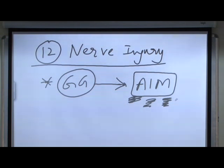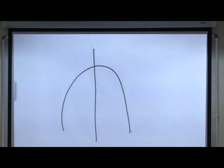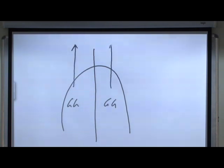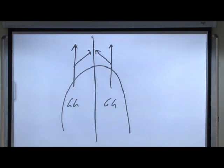You have to understand that there are two genioglossus muscles, one on each side. If this is the midline and this is the tongue, then we have genioglossus on each side. Both genioglossus muscles together take the tongue anterior, inferior, and medial. Medial actions will cancel each other out. So the tongue will basically move anterior and inferior — that is tongue protrusion.